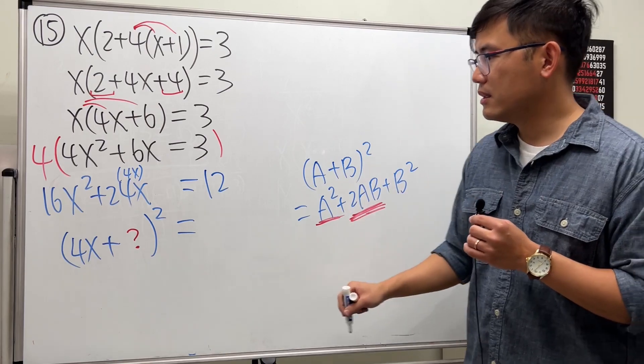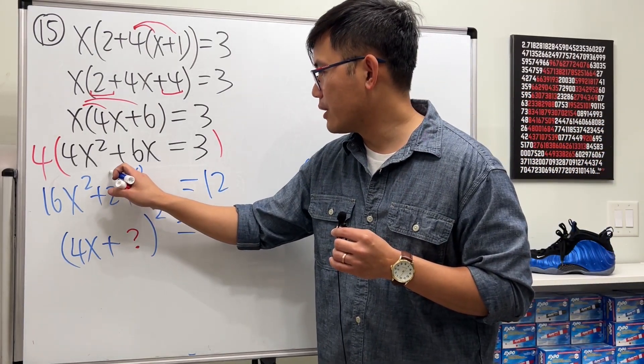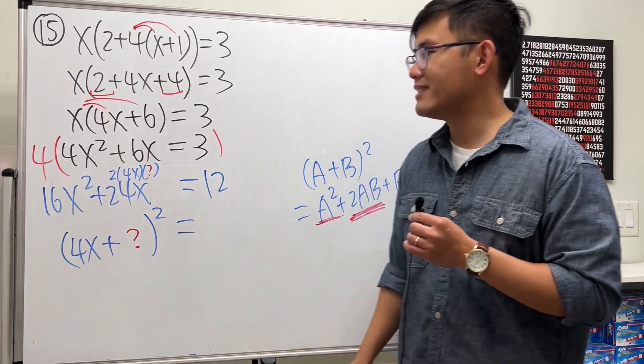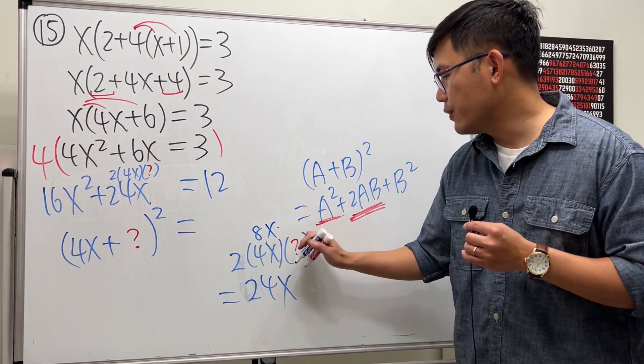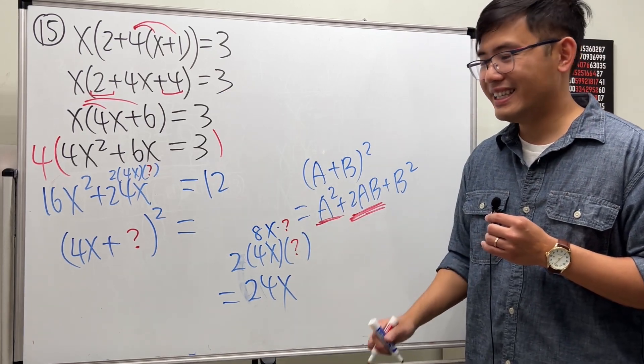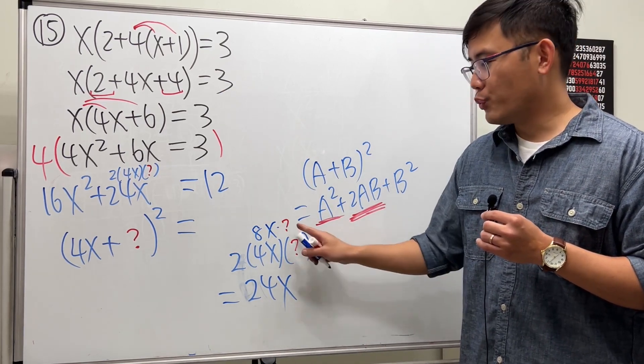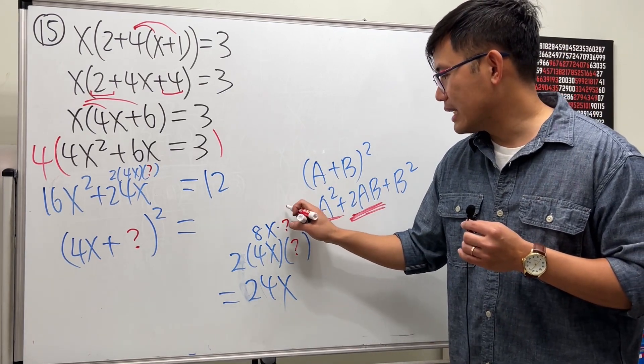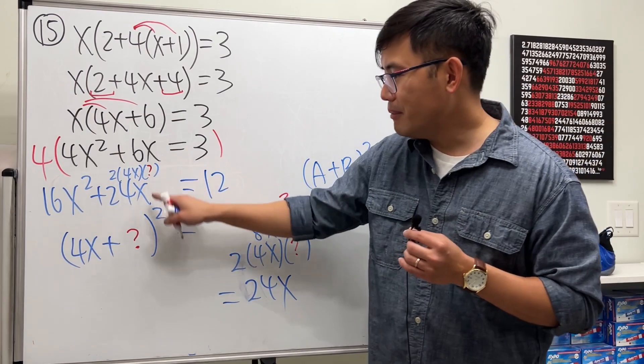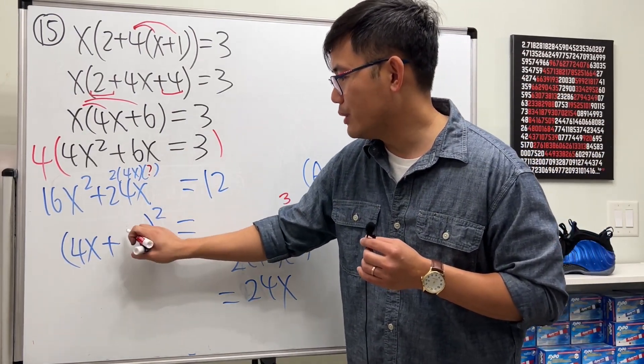But there's a 2 in front, so we must have a 2 right here. And now the question is, what should I put in the parentheses? 2 times 4 is 8x, and then don't forget we still have to multiply by the question mark. So what's question mark? What times 8 is equal to 24? The answer is 3. So we must have this right here being equal to 3. So that means the question mark here is equal to 3.